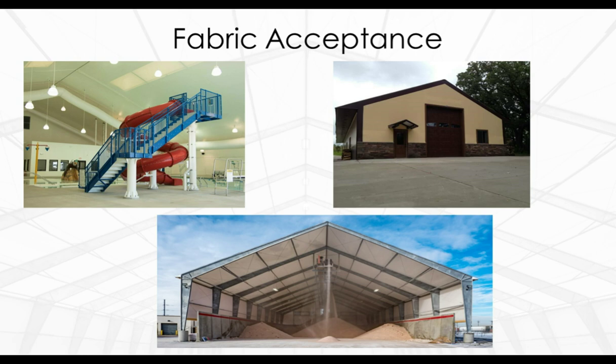Why aren't fabric buildings as widely used as engineered metal buildings? Pre-engineered metal buildings have been around longer — nearly 25 years ago, fabric buildings were mostly tents. The rigid frame technology allowing pre-engineered fabric structures was introduced by Legacy Building Solutions in 2010. Fabric structures are not ideal for flat-roof buildings, though fabric buildings are becoming more widely used in industries including aviation, bulk storage, riding arenas, manufacturing, and mining.